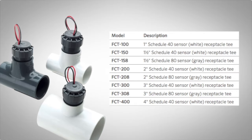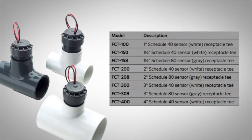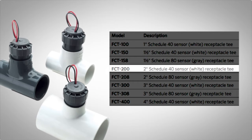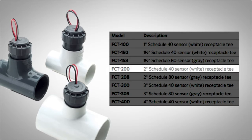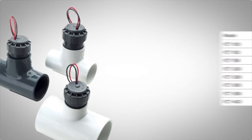For example, if you are using a two inch schedule 40 sensor body, then you would choose FCT 200. Please refer to the Hunter catalog or the FlowSync owner's manual to find the most appropriate sensor body model to use.